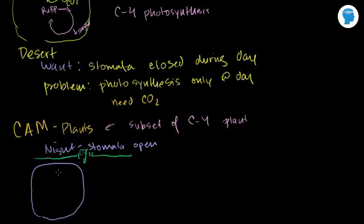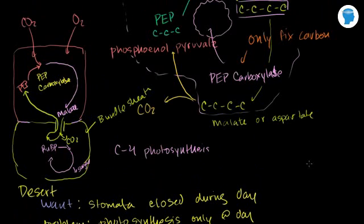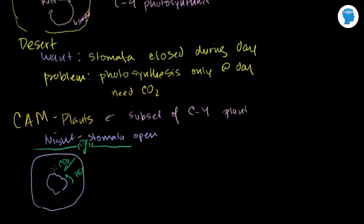And then it fixes the carbon dioxide. It fixes it the exact same way that the C4 plants do. You have your CO2 come in, you have your PEP. It's all facilitated by PEP carboxylase. That's the enzyme that can only fix CO2, that can only react with CO2, not with oxygen. And then that is used to produce malate, a 4-carbon molecule.